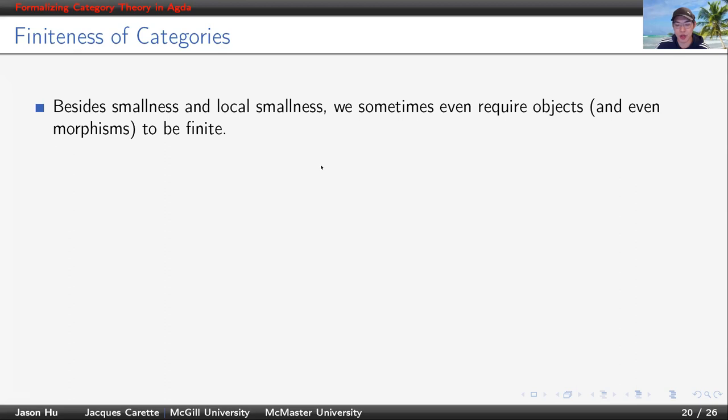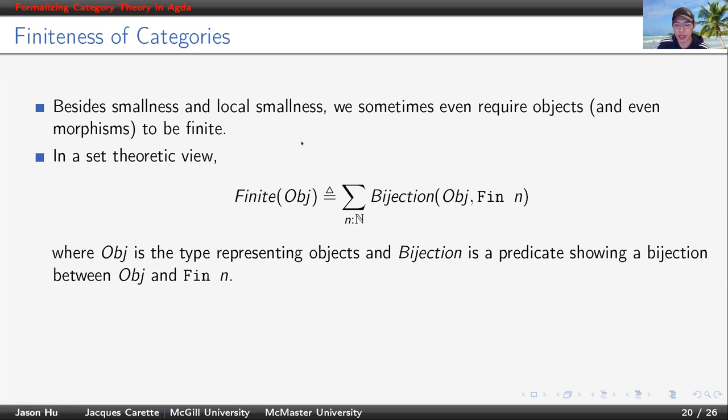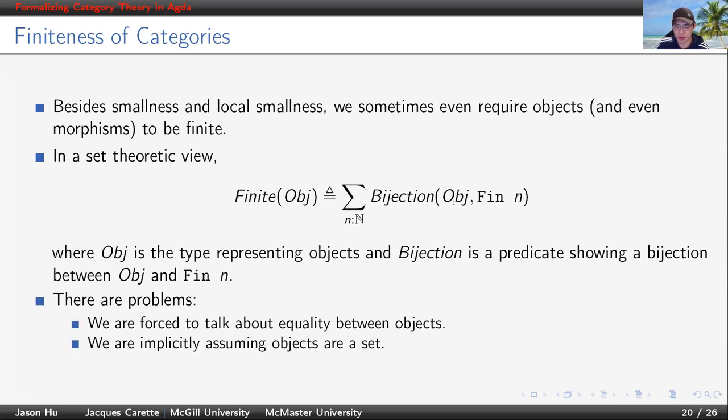Now, let's consider a case where we need to consider finiteness of a category. In a set-theoretic foundation, we will simply create a predicate like this. It says that there exists a bijection between objects and some finite set. Now, this predicate is very set-theoretic. By using this predicate, we then must talk about equality between objects, and even worse, we are assuming objects are a set, which is an unwarranted commitment.